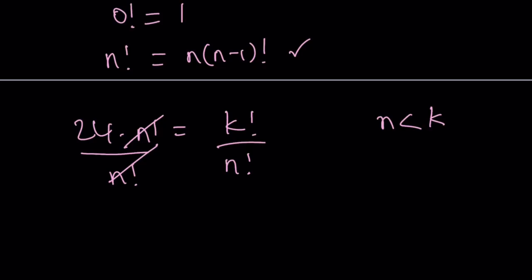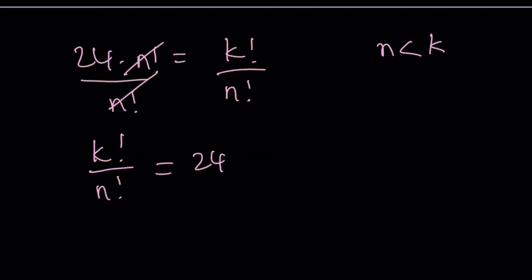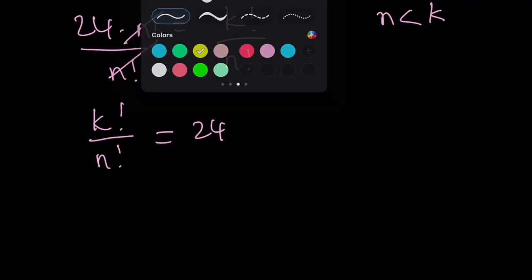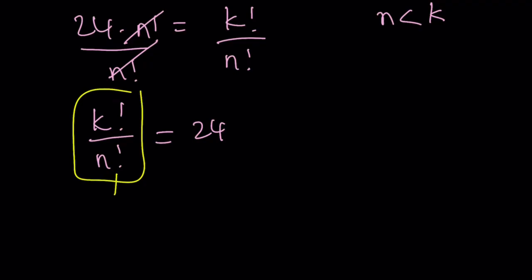So that's going to be important. Since k factorial over n factorial is 24, then k factorial over n factorial is an integer. But what kind of integer is that? Well, k is greater. So we have a bunch of numbers, k through 1, the product. And then we have n through 1. And n through 1 cancels out from k. We end up with k minus n numbers in the product.